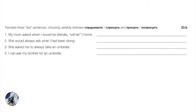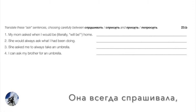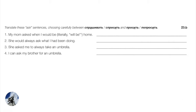Number two: she would always ask what I had been doing — repetition in the past, so imperfective: она всегда спрашивала. What I had been doing is past perfect in English, but in Russian we only have simple past. She's asking about ongoing action, so we use делать: Она всегда спрашивала, что я делал? Number three: she asked me to always take an umbrella. Now we have a request — no longer a question, more of a command. Let's treat this as a one-time request and use попросить. Since it's a habitual action, we need imperfective: Она меня попросила всегда брать зонт.